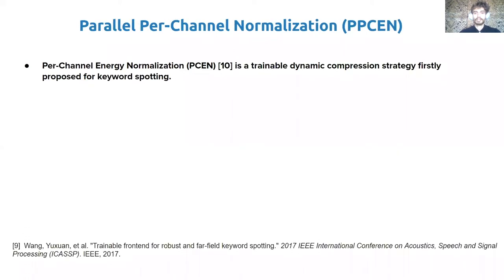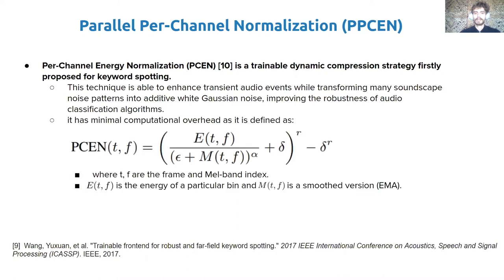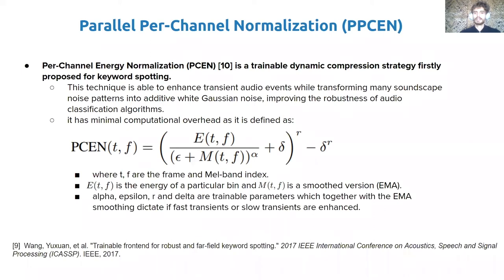Per-channel energy normalization (PCEN) is a trainable dynamic compression strategy first proposed for keyword spotting. This technique is able to enhance transient audio events while transforming many soundscape noise patterns into additive white Gaussian noise. It has minimal computation overhead as it requires only bin energy and a simple exponential moving average operation. Alpha, epsilon, r, and delta are trainable parameters which, together with the exponential moving average, dictate whether fast transients or slow transients are enhanced.